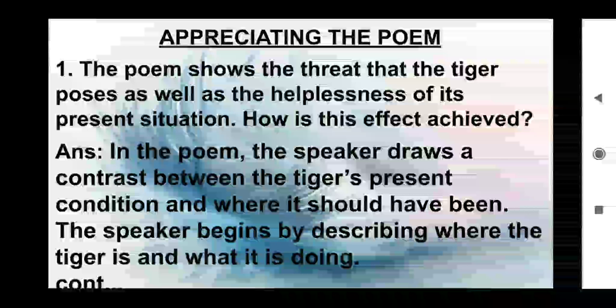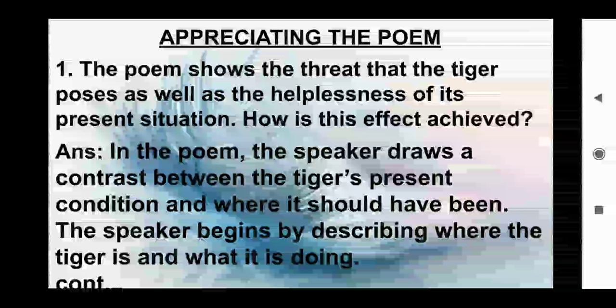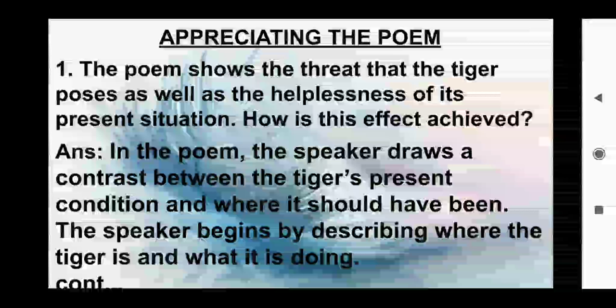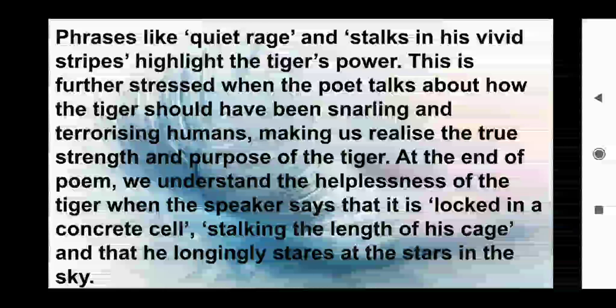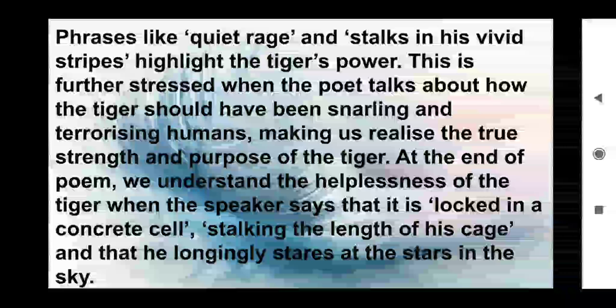Appreciating the poem. Question 1: The poem shows the threat that the tiger poses as well as the helplessness of its present situation. How is this effect achieved? Answer: In the poem the speaker draws a contrast between the tiger's present condition and where it should have been. Phrases like 'quiet rage' and 'stalks in his vivid stripes' highlight the tiger's power. The poet then describes how the tiger should have been snarling and terrorizing humans. At the end we understand the helplessness of the tiger, locked in a concrete cell, stalking the length of his cage and longingly staring at the stars in the sky.